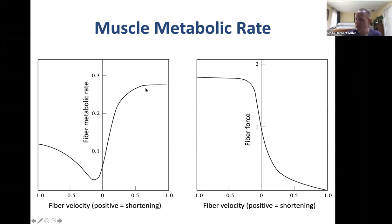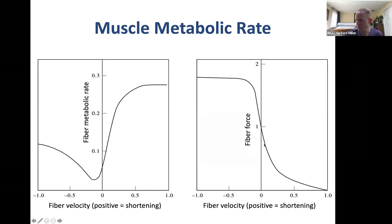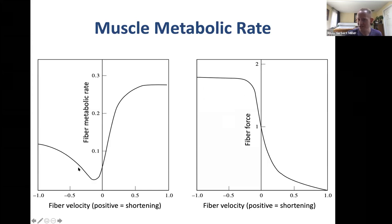This is why it's generally good to have muscles structured or activated in a way that allows fibers to contract slowly even though joints move quickly — slower fiber contraction means more force produced via the force-velocity curve, for less metabolic energy. Isometric contractions consume very little metabolic energy. A slow eccentric velocity is actually the most economical position on the energy-velocity curve.